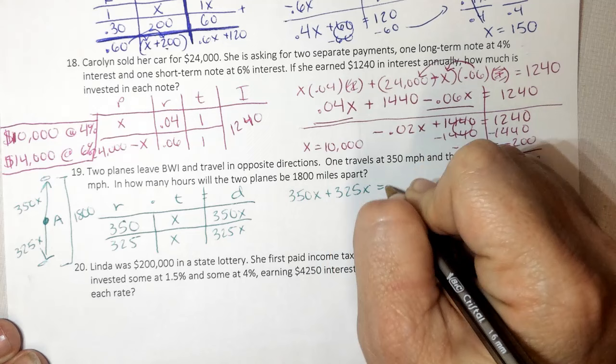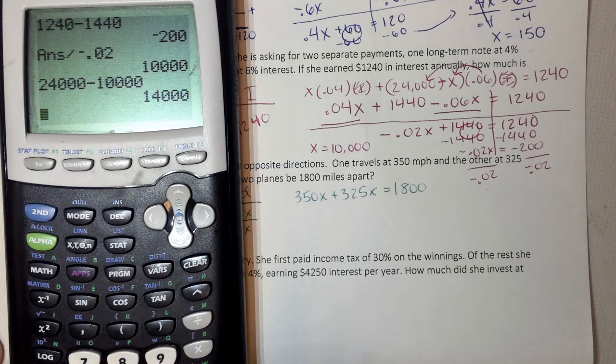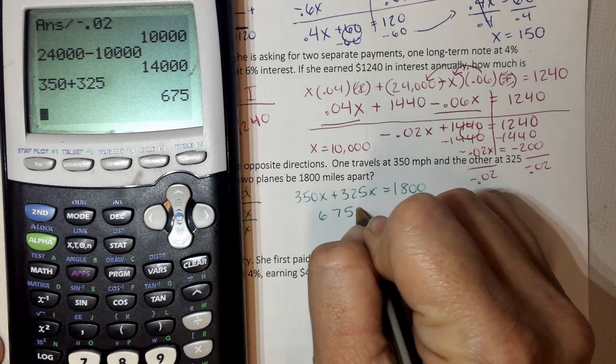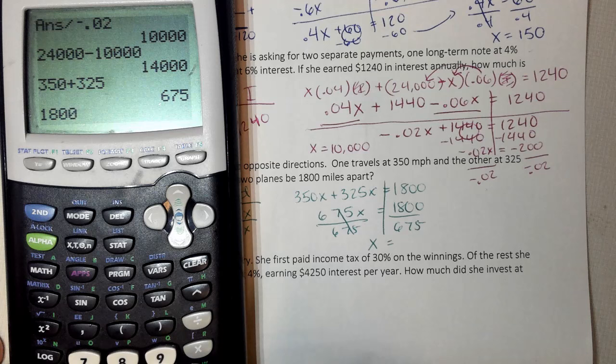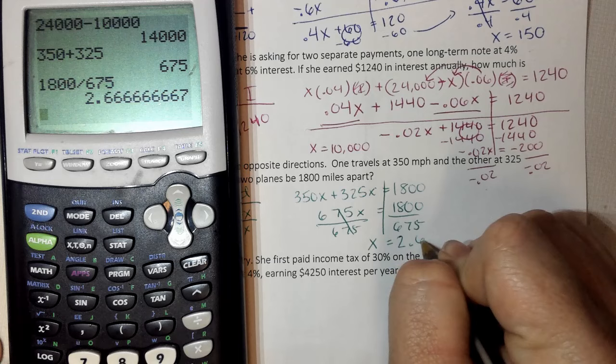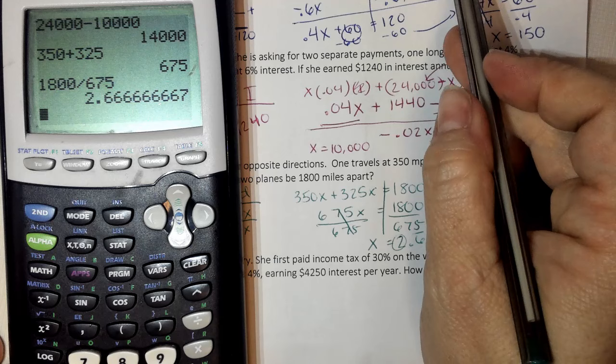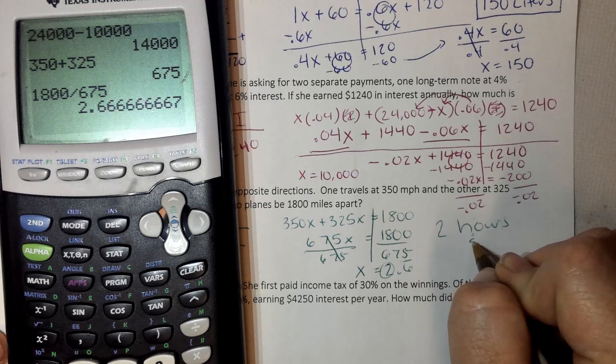So I know that my two distances equals my total distance. So we have 350X plus 325X equals 1,800. And when I combine those, 675X divided by 675, I get X equals 2.6 repeating. So right away, I know two hours. And 0.6 repeating, we already found up here at number 16. 0.6 repeating was 40 minutes. So two hours and 40 minutes.